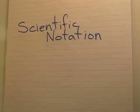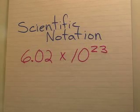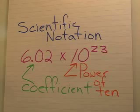Okay, let's start with scientific notation or exponential notation. Let's take a number that's common to chemistry, 6.02 times 10 to the 23rd. That's the coefficient. The 10 to the 23rd is the power of 10.